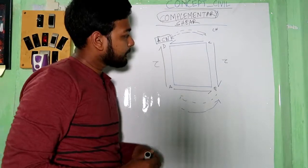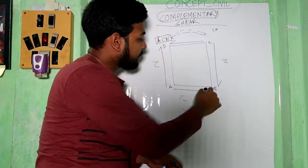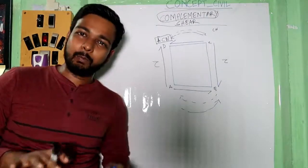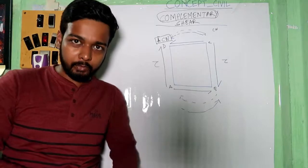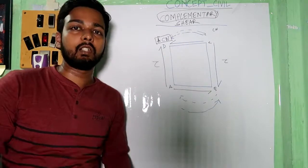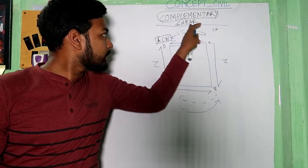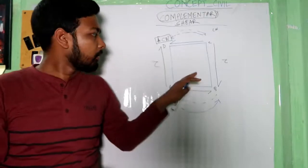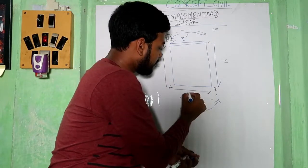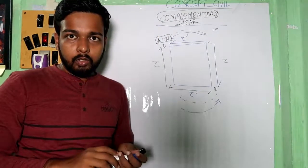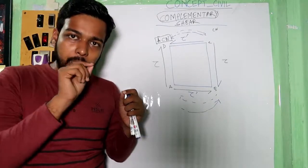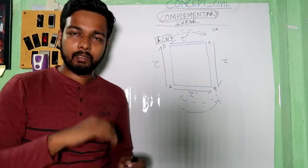So, point number one: Tau and Tau form a couple, so the body will rotate due to that. But the system is not in equilibrium, so we need to produce another couple — we need to introduce another opposite direction shear force. Then the body should be in equilibrium. Now I am saying this is Tau and this is Tau. Therefore, we can say that according to the principle of complementary shear stress, a set of shear stress acting across a plane will always be accompanied by a set of balancing shear stress.